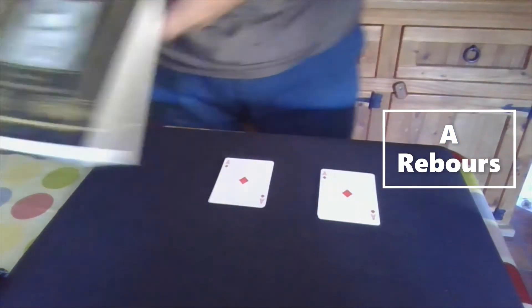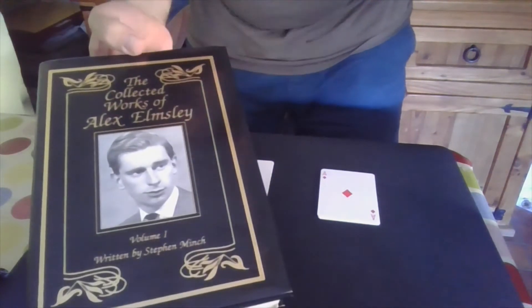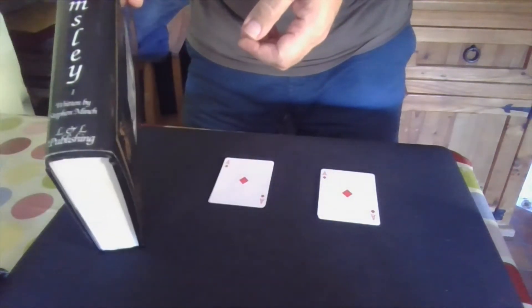This evening is a trick from this book here. This is the complete works of Alex Elmsley, volume number one.